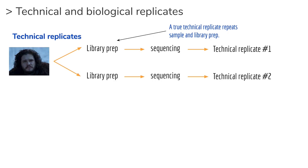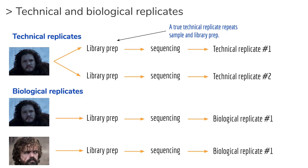Technical replicates ideally start with the same source material and you do the exact same library prep over and over again. Biological replicates use the same library prep and sequencing protocol but from different starting material — condition one versus condition two, mouse genetic background A versus B, or human one versus human two.